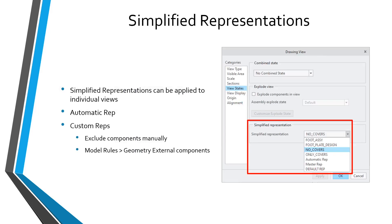Third, you can apply simplified representations to individual views. By doing this, you're reducing the amount of detail in individual views and getting an improvement in performance. You could apply the automatic rep to different drawing views or a custom simplified rep. For example, maybe you have simplified reps that exclude certain components, or maybe you have one driven by model rules that only brings in the external components.